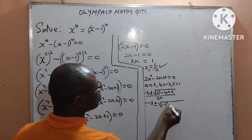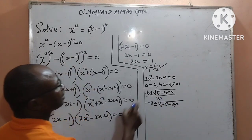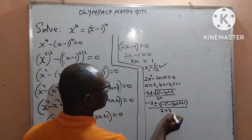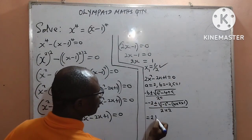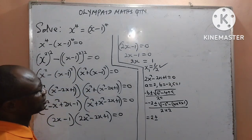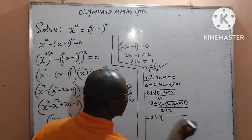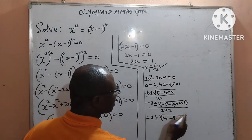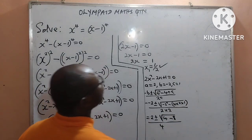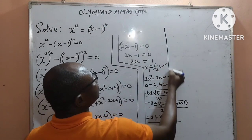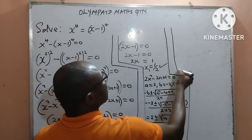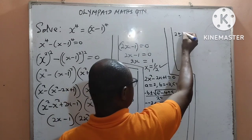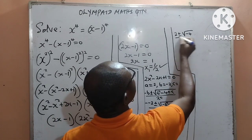My b is negative 2, so minus b is minus negative 2, plus or minus the square root of negative 2 squared minus 4 times 2 times 1, all over 2 times 2. This gives positive 2 plus or minus the square root of 4 minus 8, all over 4. That simplifies to 2 plus or minus the square root of negative 4, all over 4.